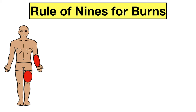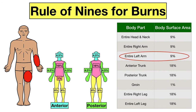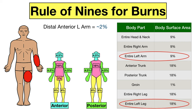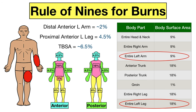This patient has a full thickness burn to the distal anterior left arm and a partial thickness burn to the proximal anterior left leg. The entire left arm is 9% and the anterior side is 4.5%. Since this burn only involves half of the anterior aspect, the body surface area is approximately 2%. For the proximal anterior left leg, the entire left leg's anterior side is 9%, and since this burn involves half of that anterior aspect, the body surface area is approximately 4.5%. So this patient's burns involve a total body surface area of about 6.5%.